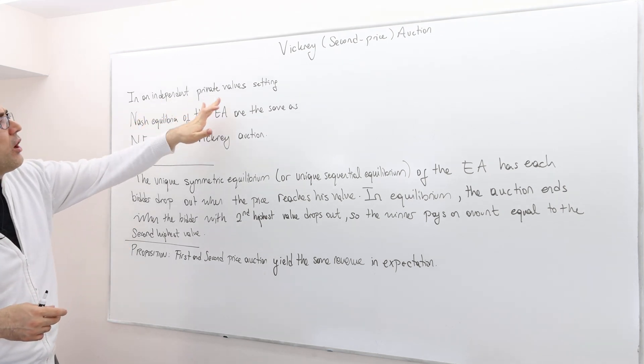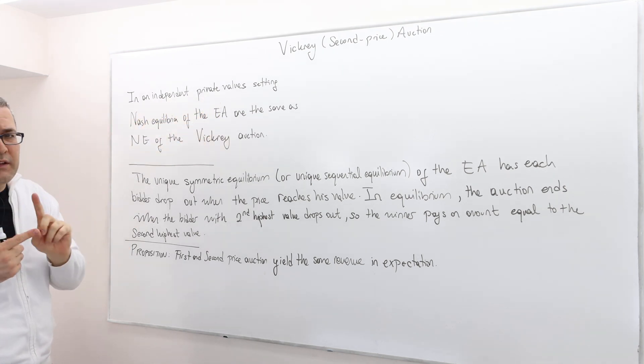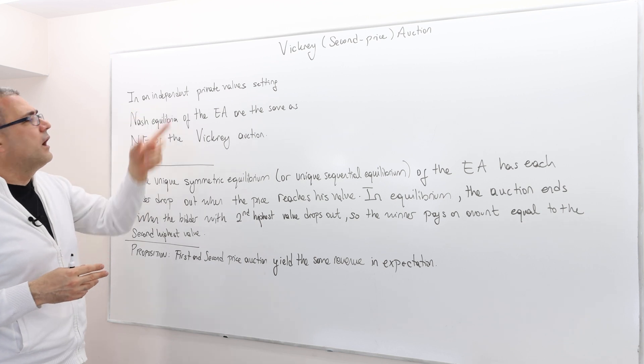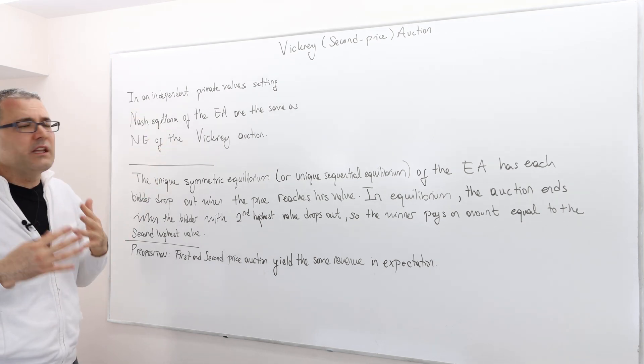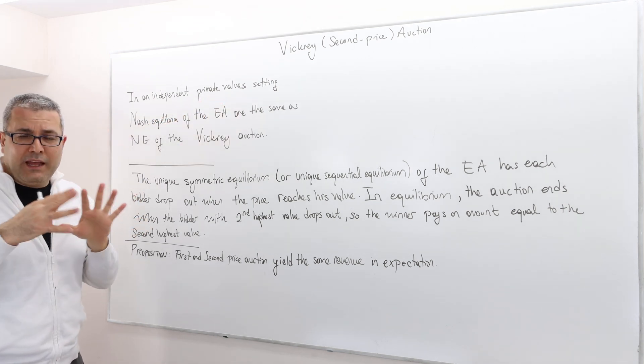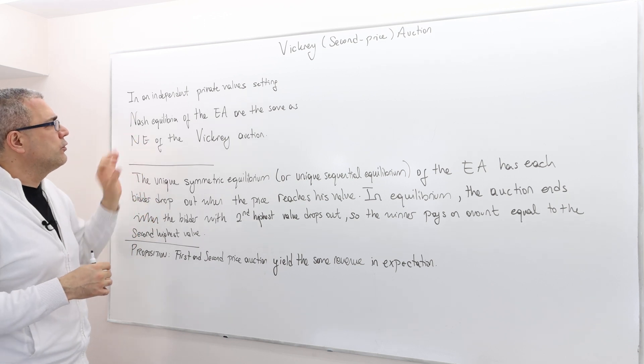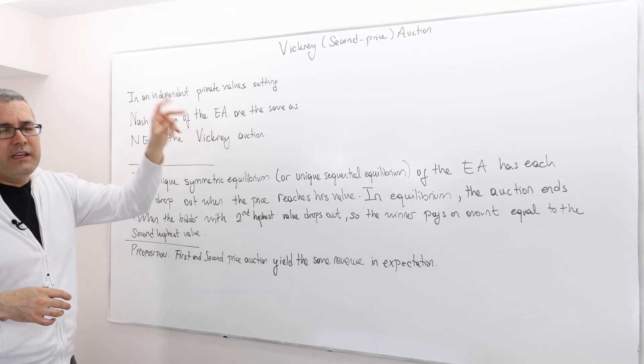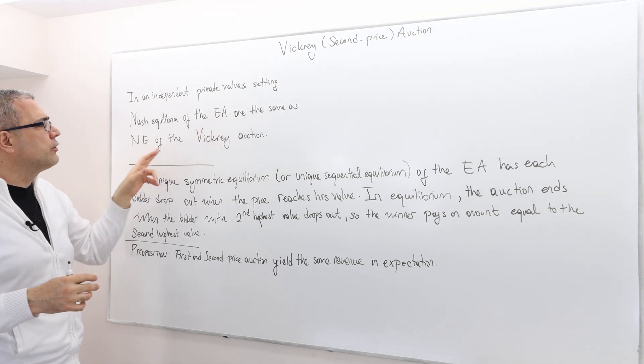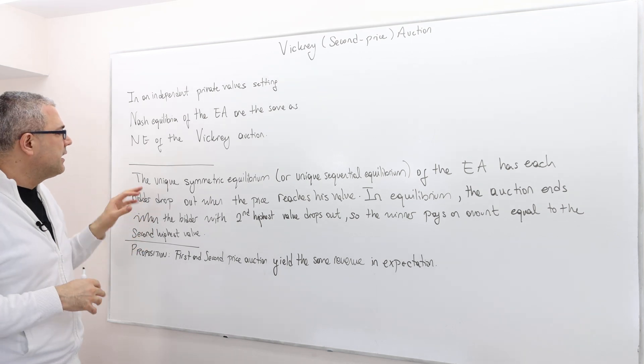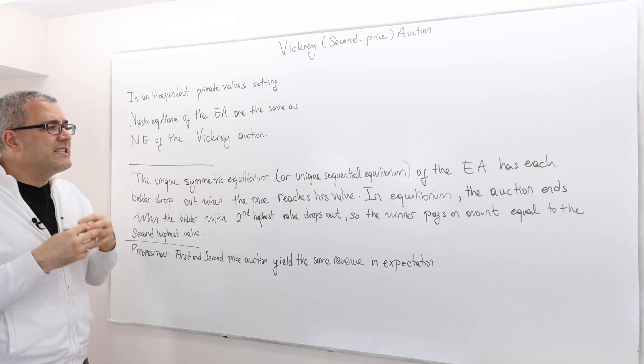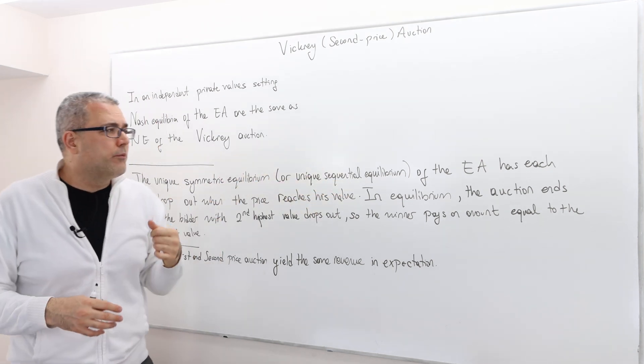So in an independent private value setting, that's very important because the following statements are not true if the values are not private or if they're not independent. In an independent private value setting, Nash equilibria, there might be many Nash equilibriums of the English auction. So EA is the English auction.